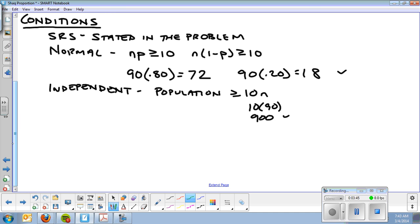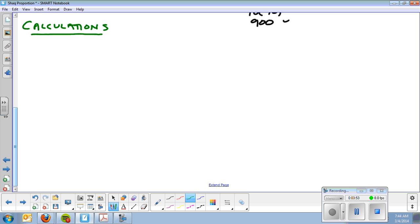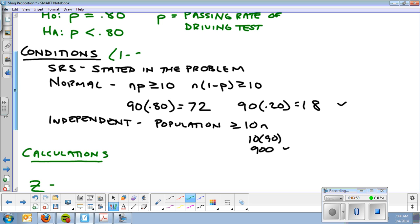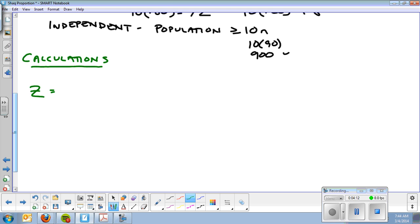Now we move on to my favorite part, the calculations. Few differences here, one in the formula. It is a one-sample z-test, one-sample z-test proportions. We're going to use the formula P-hat minus P over standard deviation, which is P(1 minus P) over N. And that is on your formula sheet. We can also call this P-hat minus P over the standard deviation of P-hat.